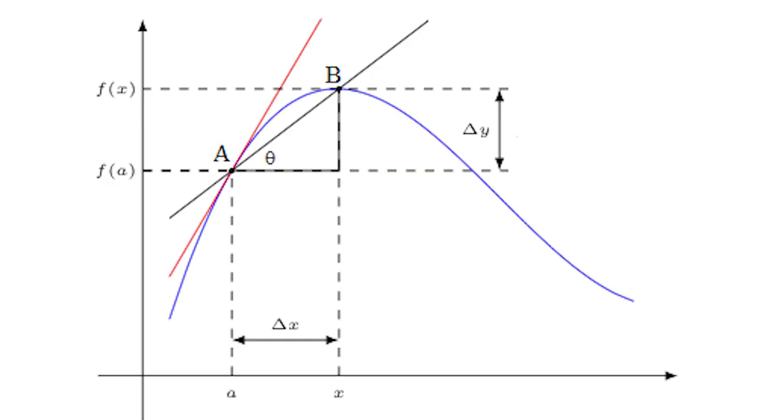we will be studying the slope of chords in a curve. Let us assume a function, y = f(x), and AB is a chord of the curve. If we draw lines parallel to the axis and make a right-angle triangle with an angle, say theta, then tan θ = Δy/Δx. Now,